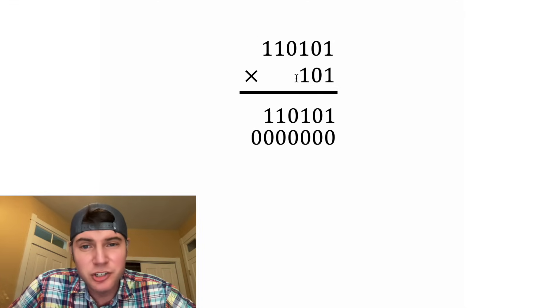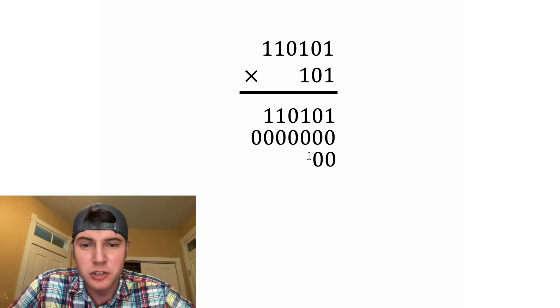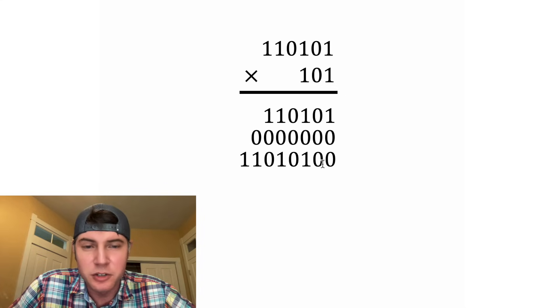And then for this last term, we're going to put in double 0 for the placeholder, and then we're going to multiply 1 times all of this, which would just be all of that. So 1 1 0 1 0 1 became a 1 1 0 1 0 1 with the 2 zero placeholder.